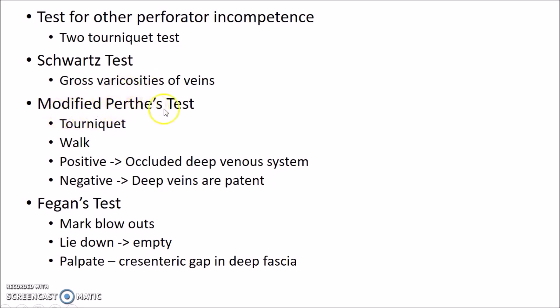The next test is the modified Perthes' test, done for testing the patency of deep veins, in the standing position. A tourniquet is tied below the saphenous opening when the veins are full, then the patient is asked to walk for three to five minutes. If the superficial veins become more distended and the patient complains of bursting pain, the test is positive, indicating an occluded deep venous system. If the dilated superficial veins collapse, the test is negative, meaning the deep veins are patent.